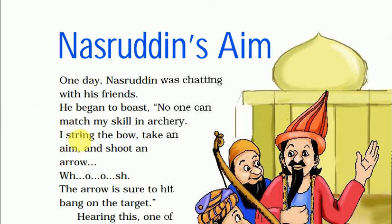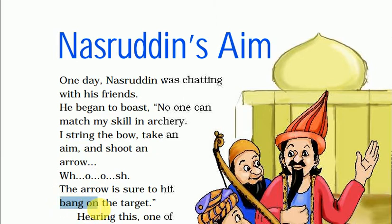I string the bow — string ka matlab koi dhaga ya tar. Yahan string verb ke roop mein use kiya gaya hai — main dhanush mein tar lagata hoon. Take an aim — koi lakshya saadta hoon. And shoot an arrow — aur main shoot karta hoon, arrow chhoda hoon. The arrow is sure to hit bang on the target — jo teer hai woh lakshya tak zaroor pahunchta hai. Bang on ka matlab hai takrana — target par seedha takrana.